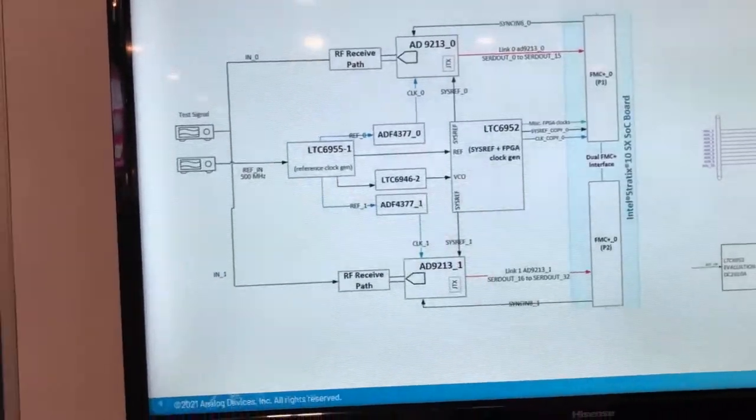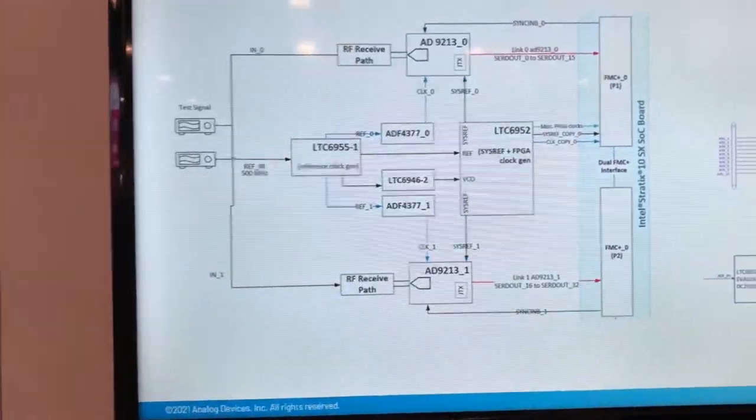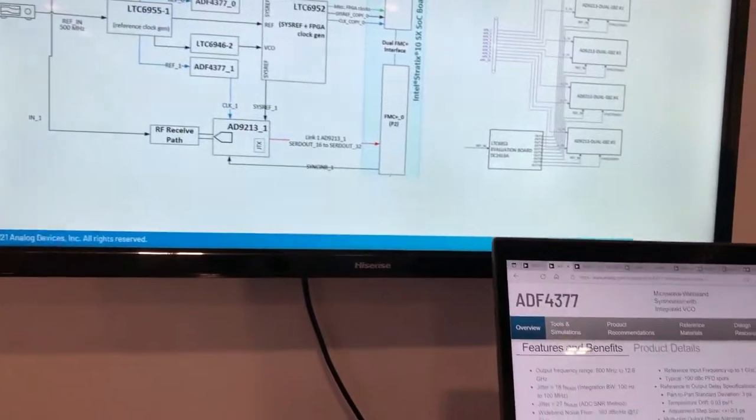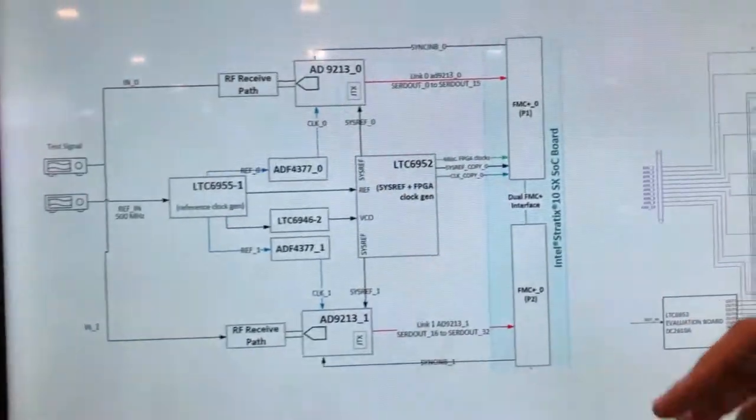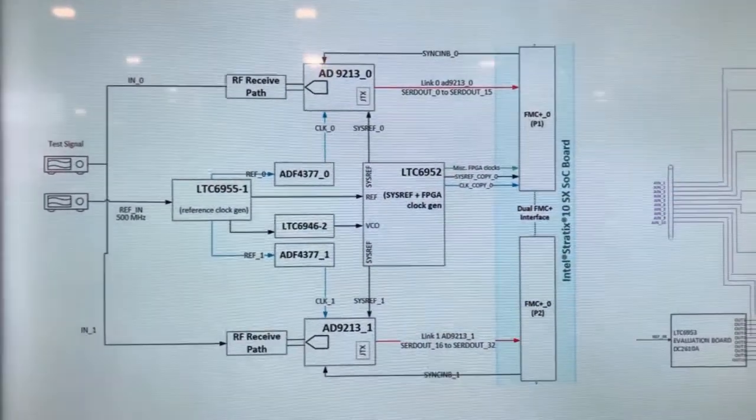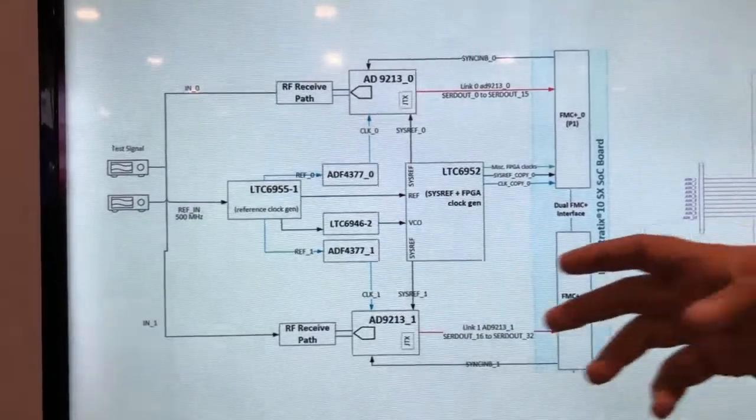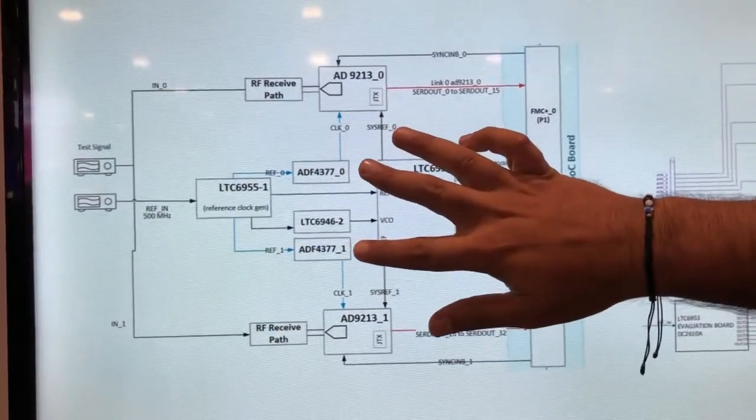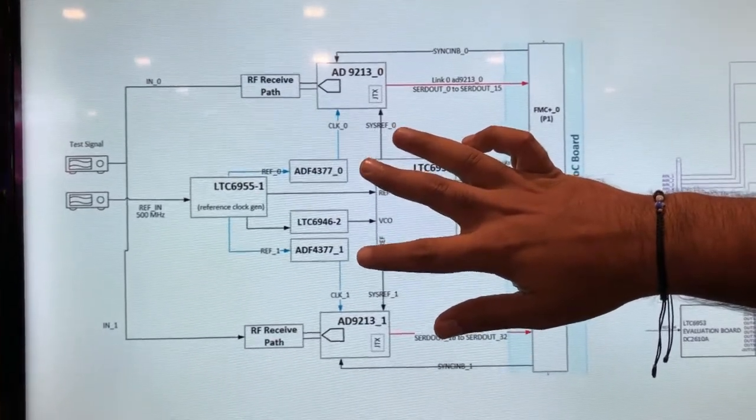Okay, and that lets you use the two converters to effectively double the sample rate. Yes, and so this is the clocking architecture that the 4377 enables. With that we have a single reference that's coming into both of them that makes sure that the two 4377s are synchronized.